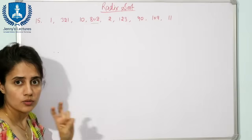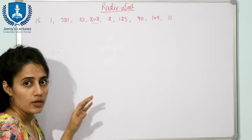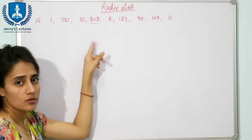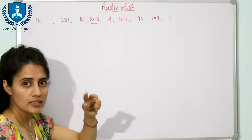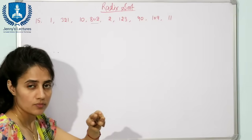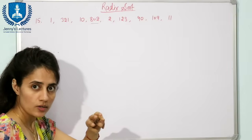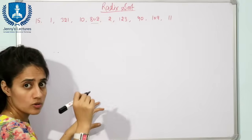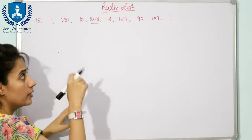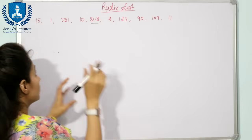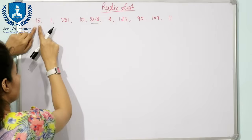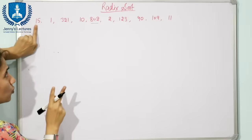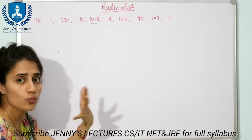The second step is to calculate how many digits are there in this maximum number — one, two, and three. The third step is to make all these numbers a three-digit number. We are going to put zeros to achieve this.